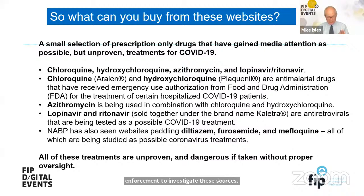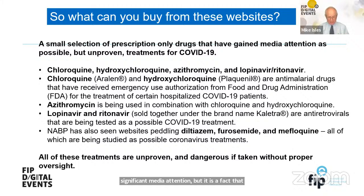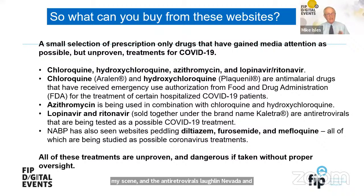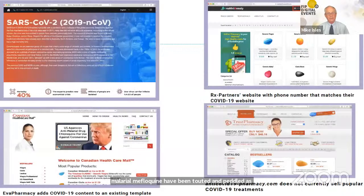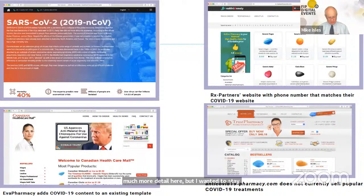Medicines that have gained significant media attention include chloroquine, hydroxychloroquine used to treat malaria, the macrolide antibiotic azithromycin, antiretrovirals lopinavir and ritonavir, antihypertensive diltiazem, diuretic furosemide, and antimalarial mefloquine — all touted and peddled as potential COVID cures. Leaders of governments can play a key part in how populations absorb and accept so-called facts; in the EU, we have had leaders whose scientific grounding has not been perfect.